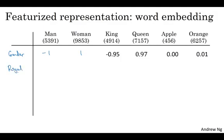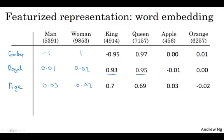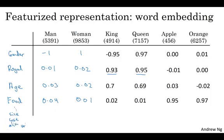Another feature might be, well, how royal are these things? And so the terms man and woman are not particularly royal, so they might have feature values close to zero. Whereas king and queen are highly royal and apple and orange are not particularly royal. How about age? Well, man and woman doesn't connote much about age. Maybe man and woman implies that they're adults, but neither necessarily young nor old. So maybe values close to zero. Whereas kings and queens are always, almost always adults. And apple and orange might be more neutral with respect to age. And then another feature, is this a food? Well, man is not a food. Woman is not a food. Neither are kings and queens, but apples and oranges are foods. And there can be many other features as well, ranging from what is the size of this? What is the cost? Is this something that is alive? Is this an action or is this a noun or is this a verb? Or is this something else? And so on.